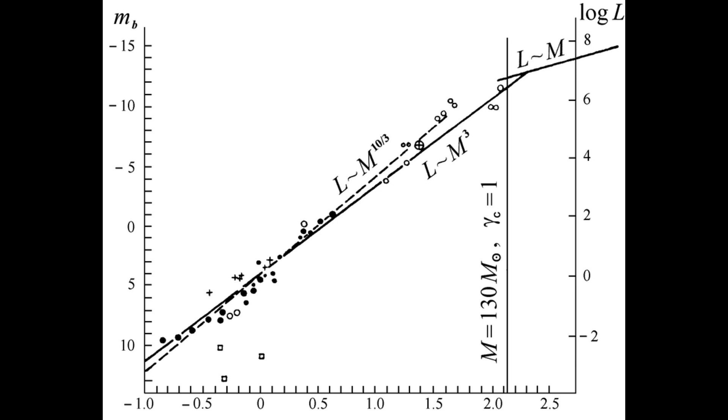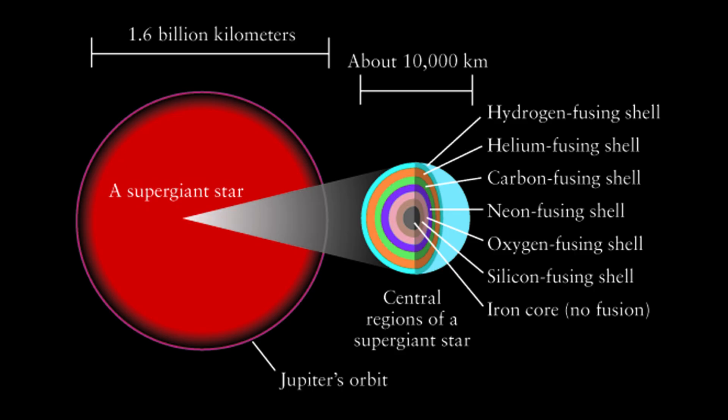So the luminosity will increase faster than the mass will. How much faster? Well, usually it'll be the mass to a power greater than one. But since larger stars fuse heavier elements, the exact parameters change across stellar sizes.